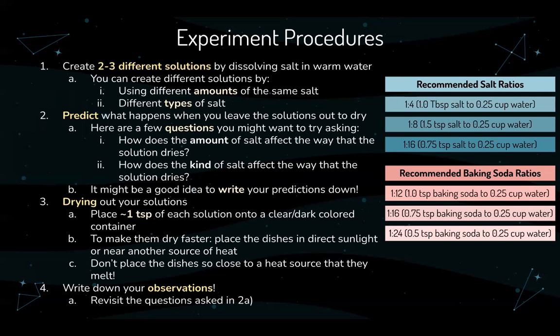Step three is drying out your solutions. Place about one teaspoon of each solution onto a clear or dark-colored container. To make them dry faster, you can place the dishes in direct sunlight or near another heat source — but make sure not to place them so close that they melt. Other heat sources you might use are a microwave or hair dryer. If I remember correctly, it took about eight hours for my solutions to dry. The next step is to write down your observations by revisiting the questions from step 2a and answering them based on your observations.